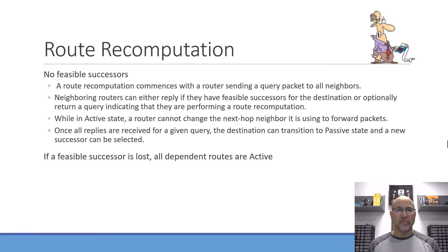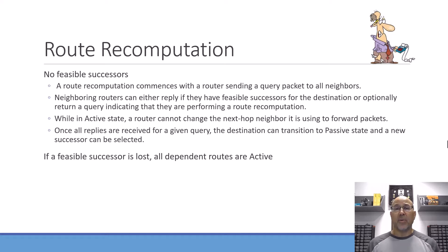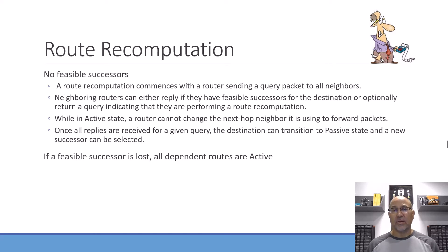So the process is: something's afoot, query everybody, get responses back, make a decision, then move to passive. There's also the hello protocol — if you suddenly stop getting hello messages from a neighbor that was a successor or next hop, then all routes that depended on that interface or forwarding router now have to go active, because you no longer have that router.